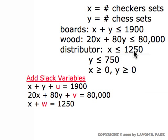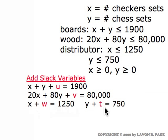In the third constraint, X less than or equal to 1,250, we add slack variable W so that X plus W equals 1,250. W represents the gap between the actual number of checker sets made and the 1,250 distributor limit. We introduce slack variable T for the constraint Y less than or equal to 750, making it Y plus T equals 750.